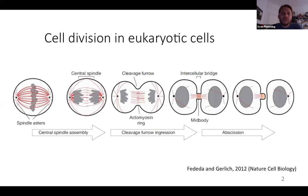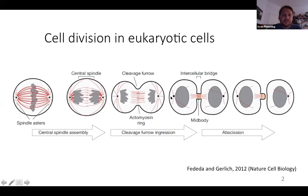You probably all know about cytokinesis and how it works. It's a very interesting process for biophysicists because there's a lot of self-organization involved. Several steps are important, and one of the most important is the creation of an actomyosin ring, which can create contractile forces to mediate the cytofission and the creation of two daughter cells.